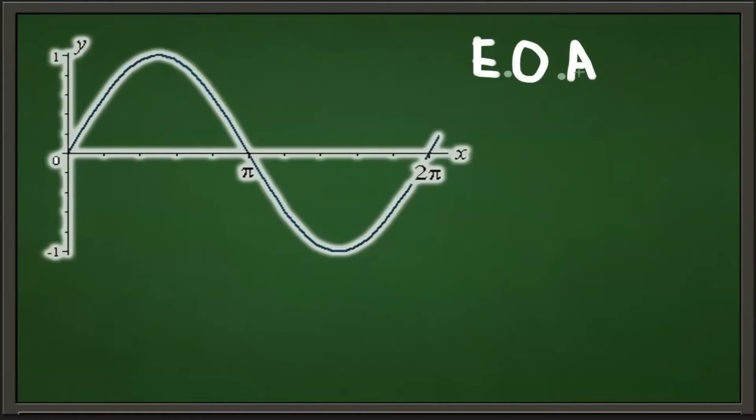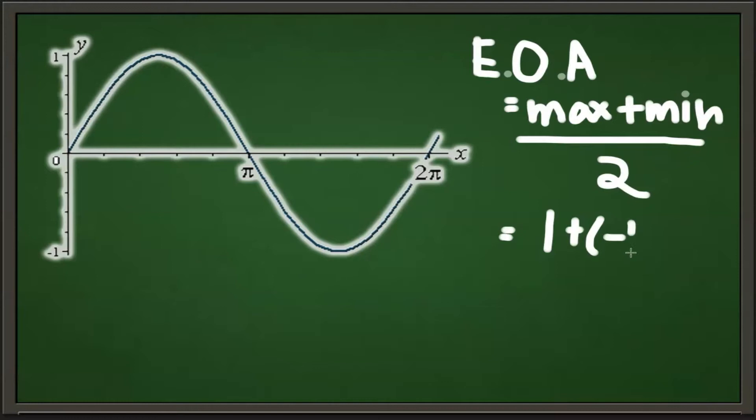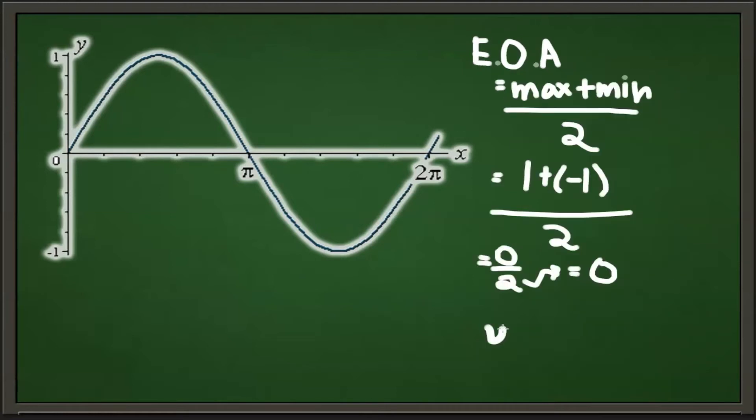The formula is (maximum + minimum)/2. So we already know the max and min is 1 and -1. So (1 + (-1))/2 equals 0/2 which just equals 0. However, the answer is not simply 0; it is an equation of a line, therefore you must put y = 0.